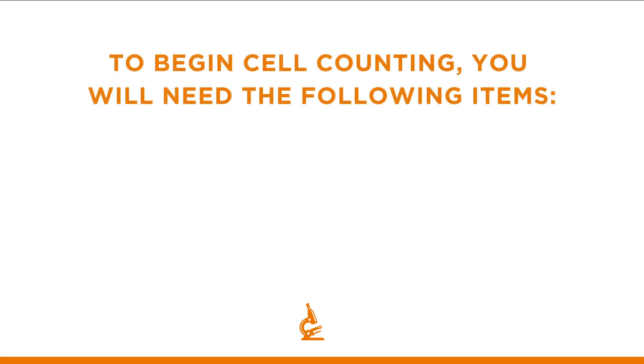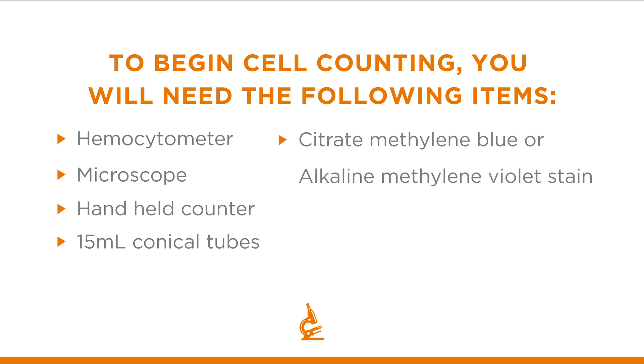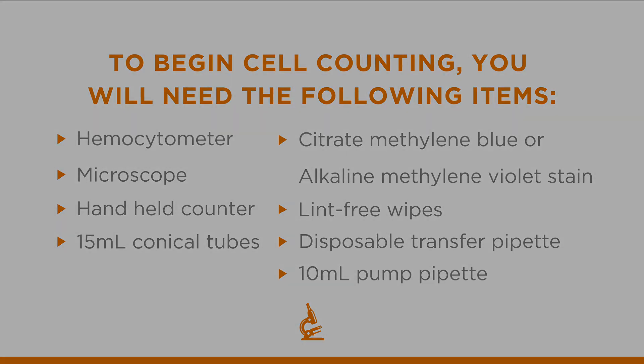To begin cell counting, you will need the following: a hemocytometer, microscope, hand-held counter, 15 milliliter conical tubes, citrate methylene blue or alkaline methylene violet stain, lint-free wipes, disposable transfer pipette, and a 10 milliliter pump pipette.